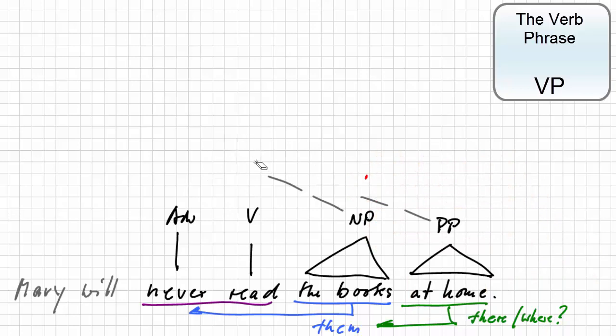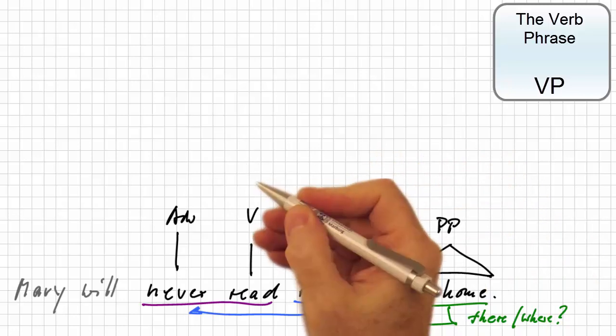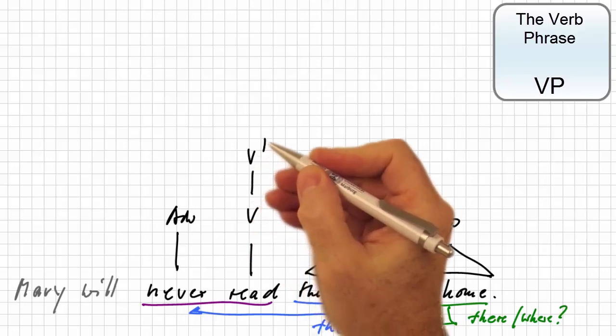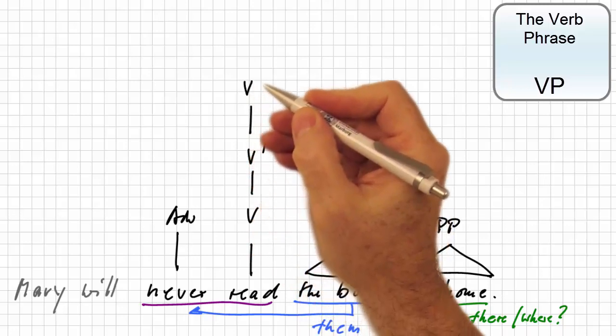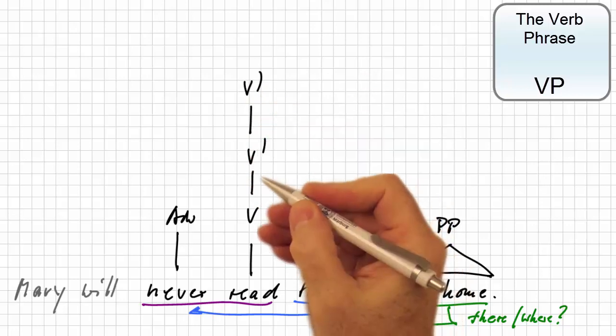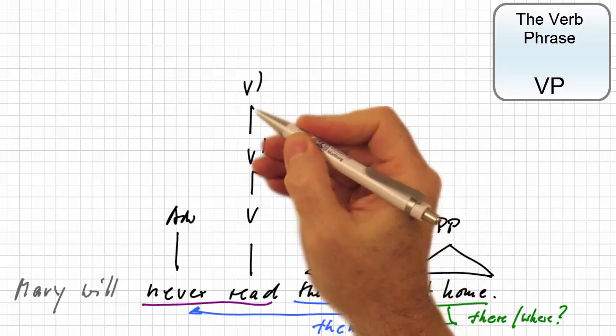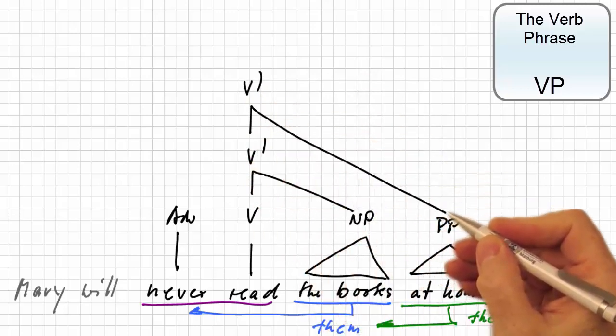Let's redraw the tree and see how we can adjoin the two phrasal categories. Like in all other constituents, we have to insert intermediate nodes, in this case, two verb bar nodes, which we write with apostrophes. And to these verb bar nodes, we can adjoin the two phrasal categories.